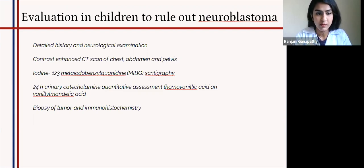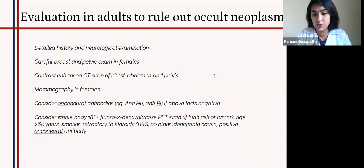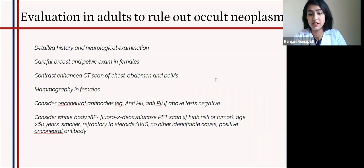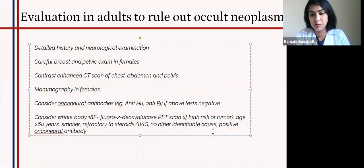In adults, similarly, a contrast-enhanced CT of chest, abdomen, and pelvis should be performed, along with careful breast and pelvic examination and mammography. If no malignancy is revealed, we check for onconeural antibodies, especially anti-RI and anti-HU. Once again, negative antibody testing does not rule out a paraneoplastic etiology — it does favor suspicion of it but does not rule out anything. If a patient is in a high-risk age group, such as around 60 years, is a smoker, or has not been responsive to IVIG or steroids, then we should definitely evaluate further.